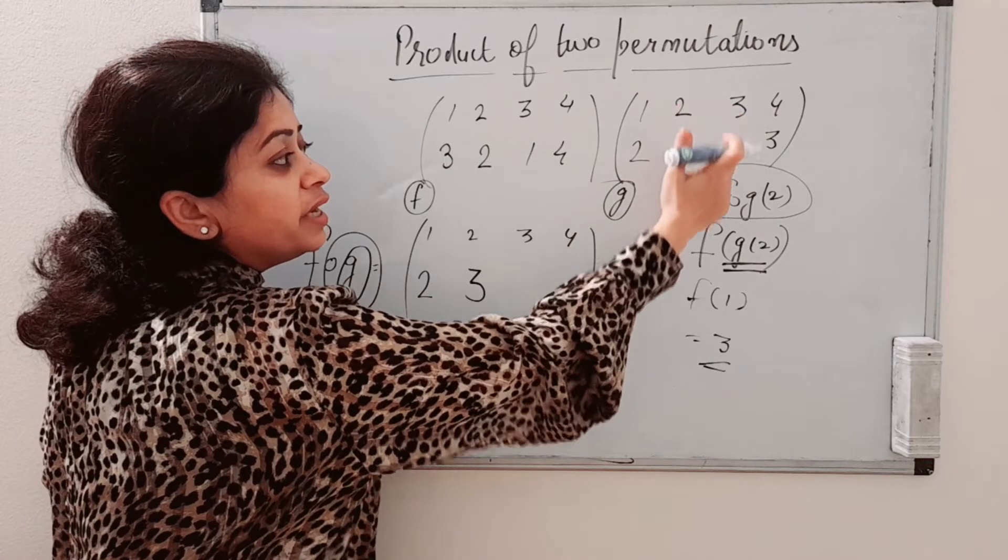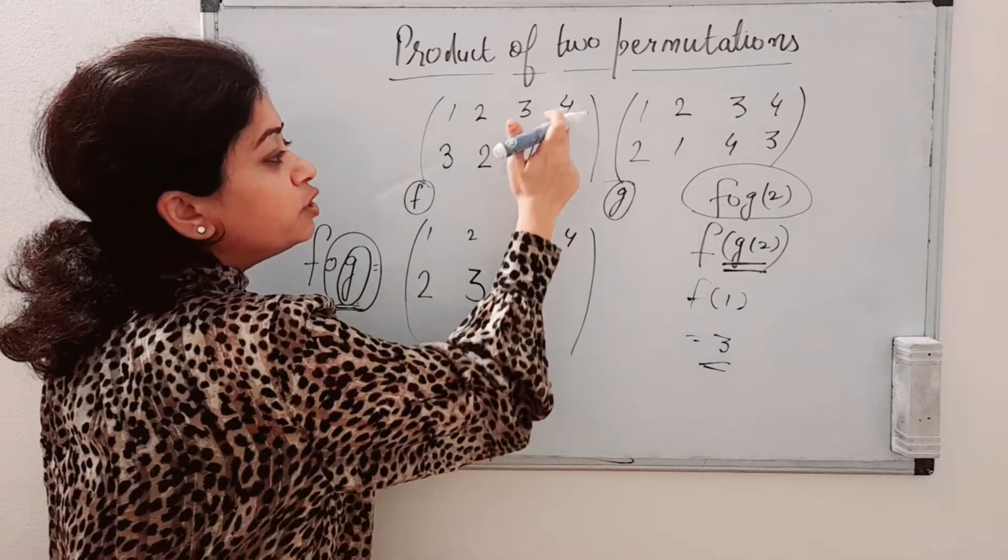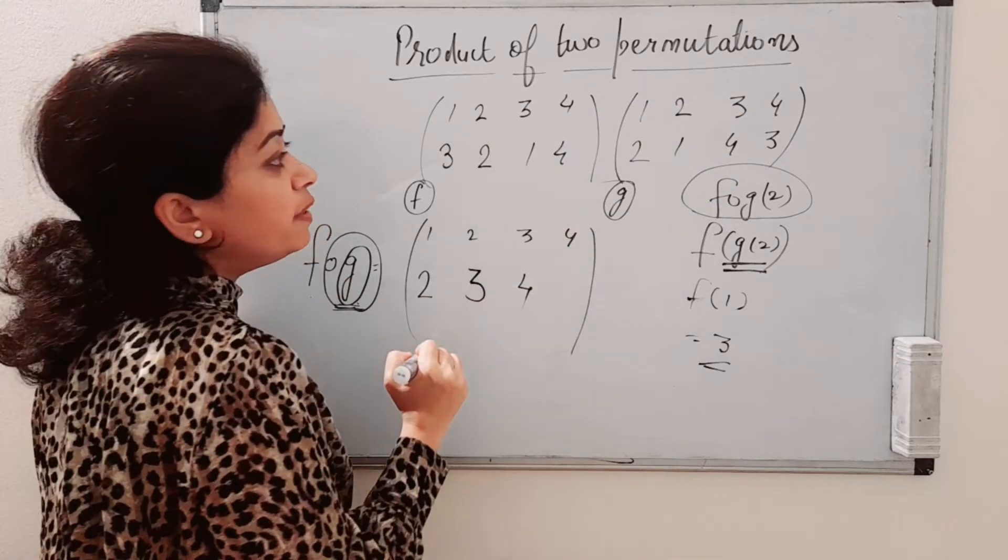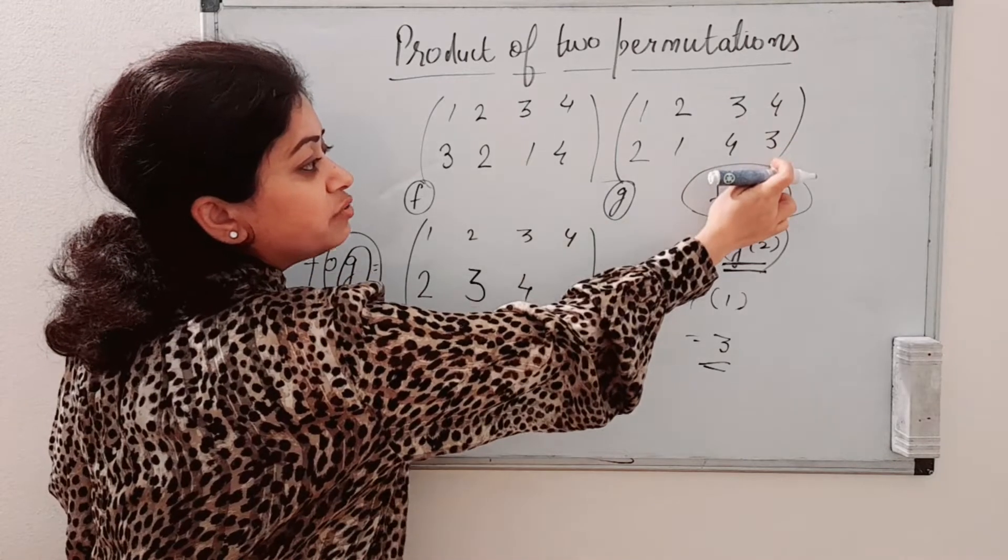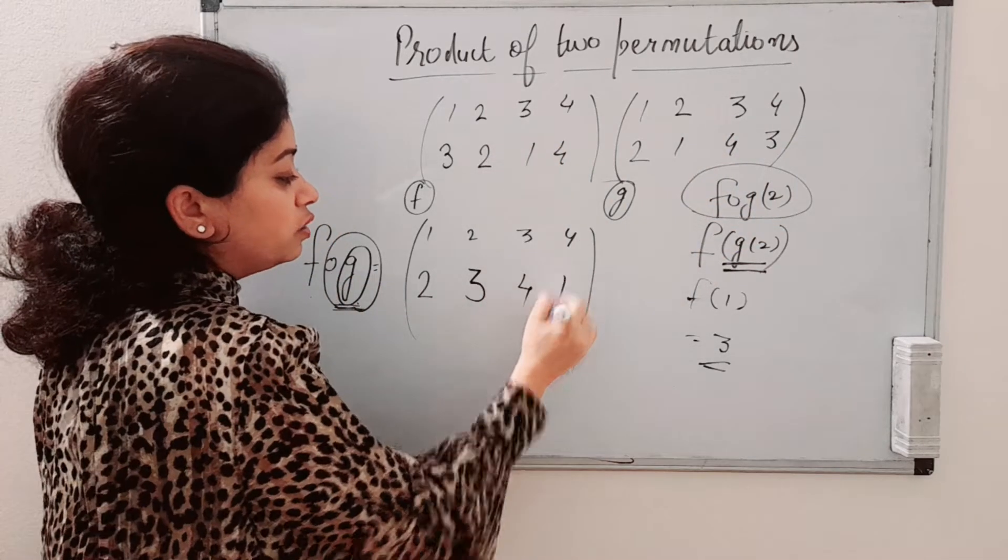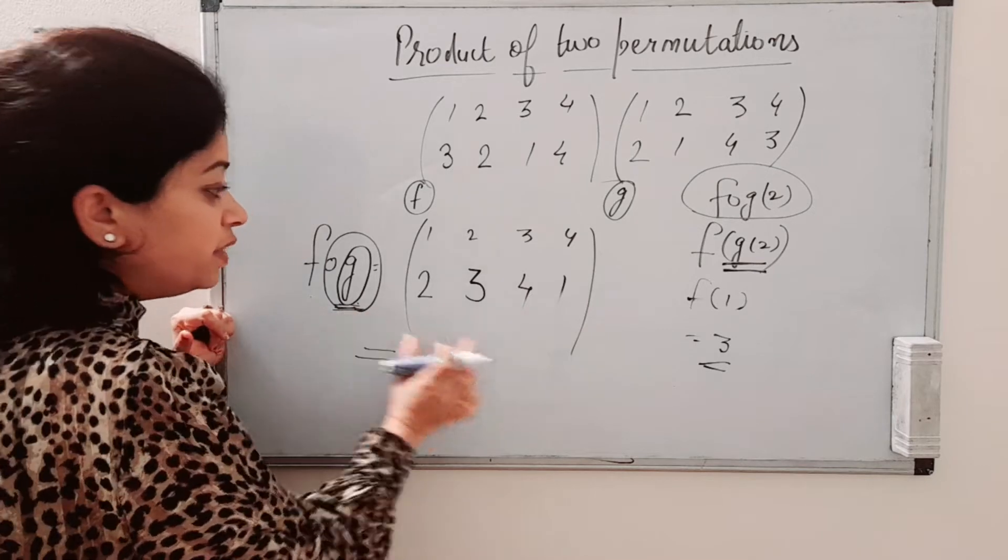Similarly, image of 3 is 4, and here image of 4 is 4. This will be 4. Image of 4 is 3, and here 3 is 1. So F of G will be this.